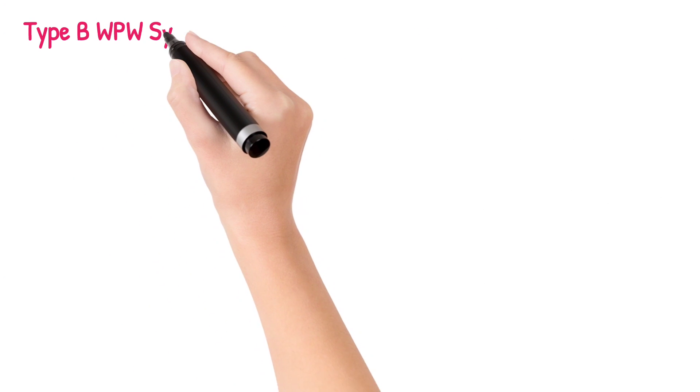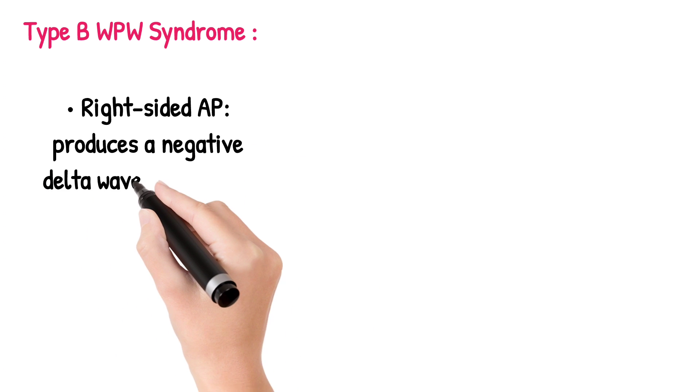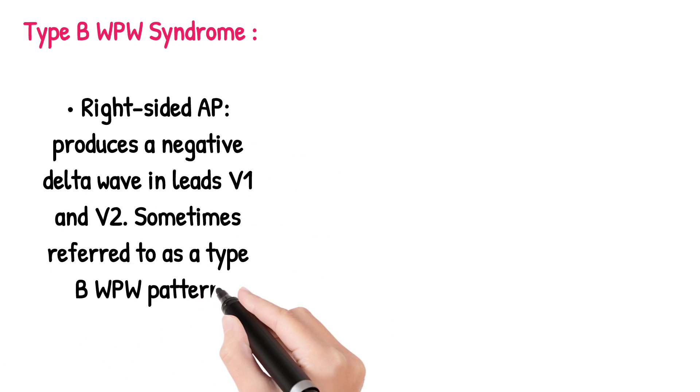Type B WPW syndrome: right-sided AP produces a negative delta wave in leads V1 and V2. Sometimes referred to as a type B WPW pattern.